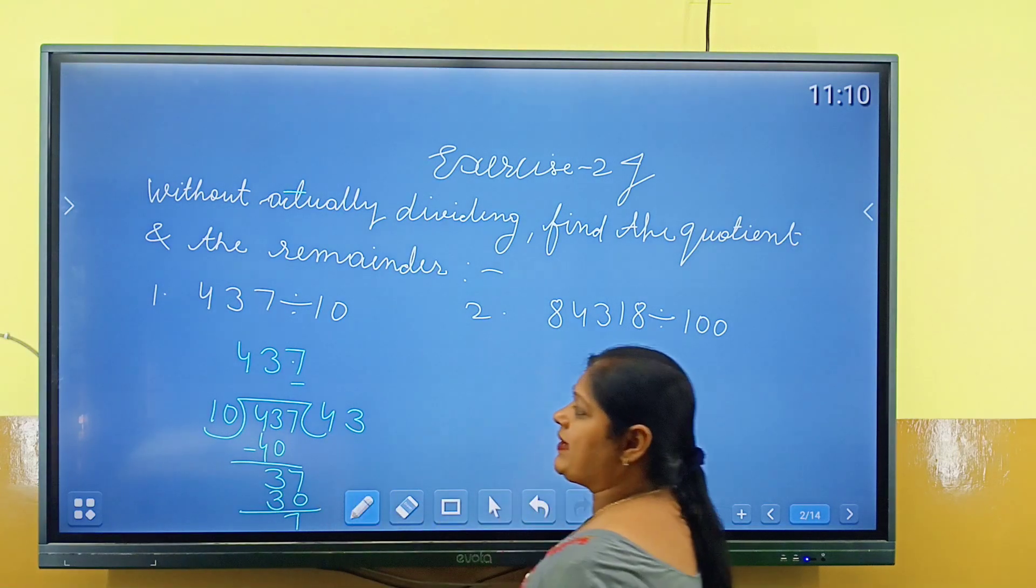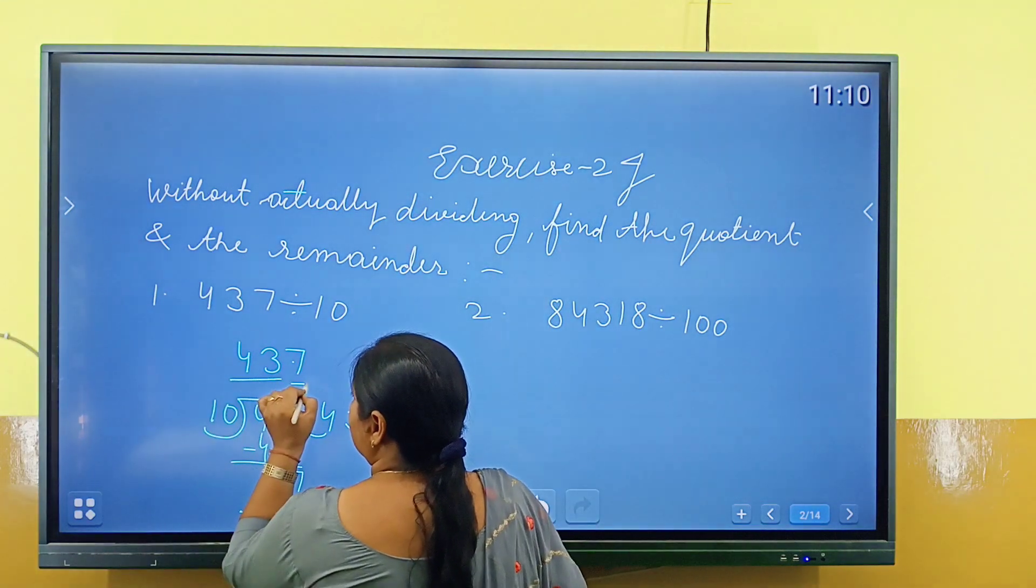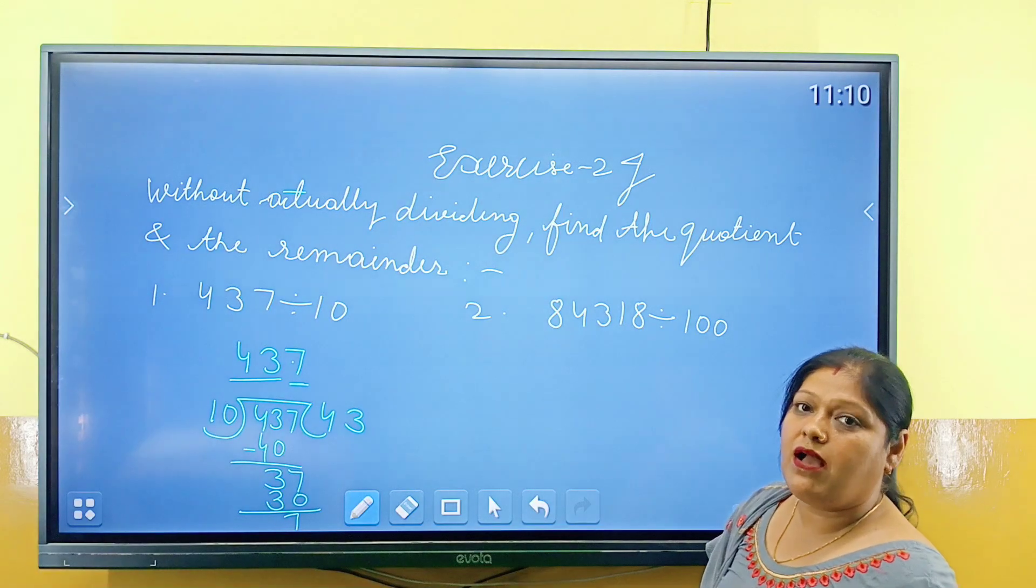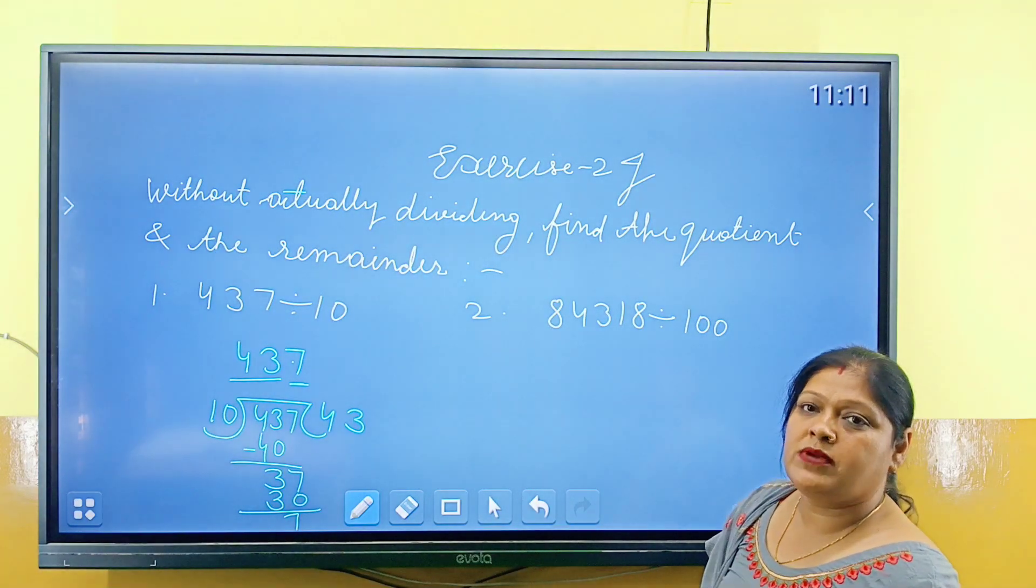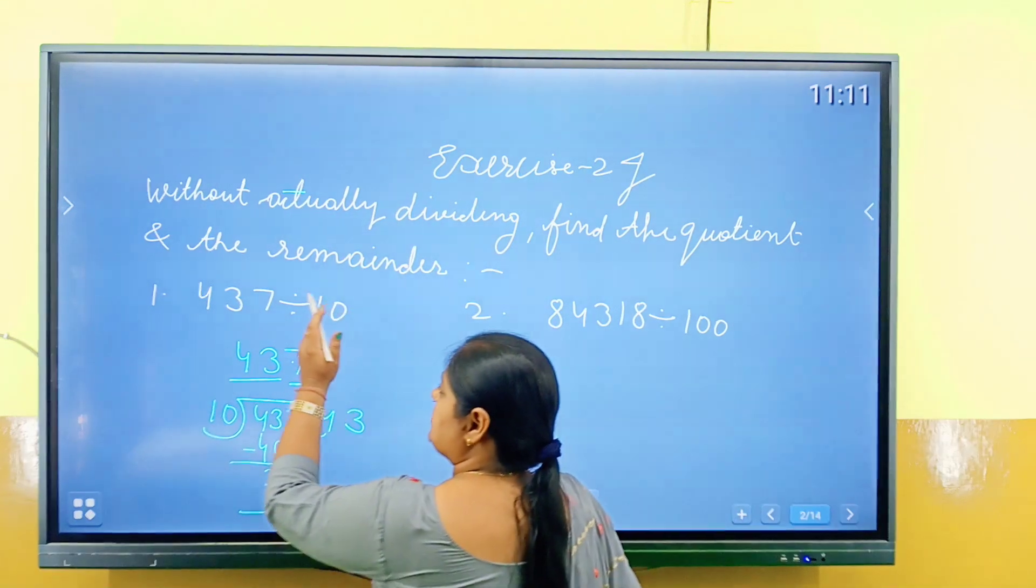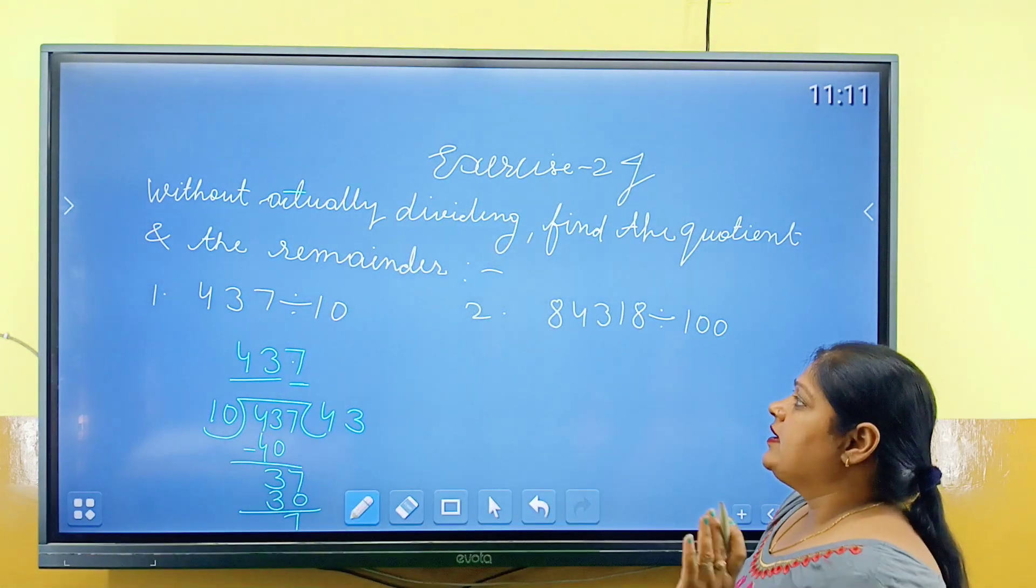43 is what we have to look at, quotient. First number is what we have to look at, and point ke baad ka number, jo hai, wo kya ho jayega, remainder. Isko hum without divide ke bhi kar sakti hain, jitni zeros hain, uske according hum answer nikal sakti hain.